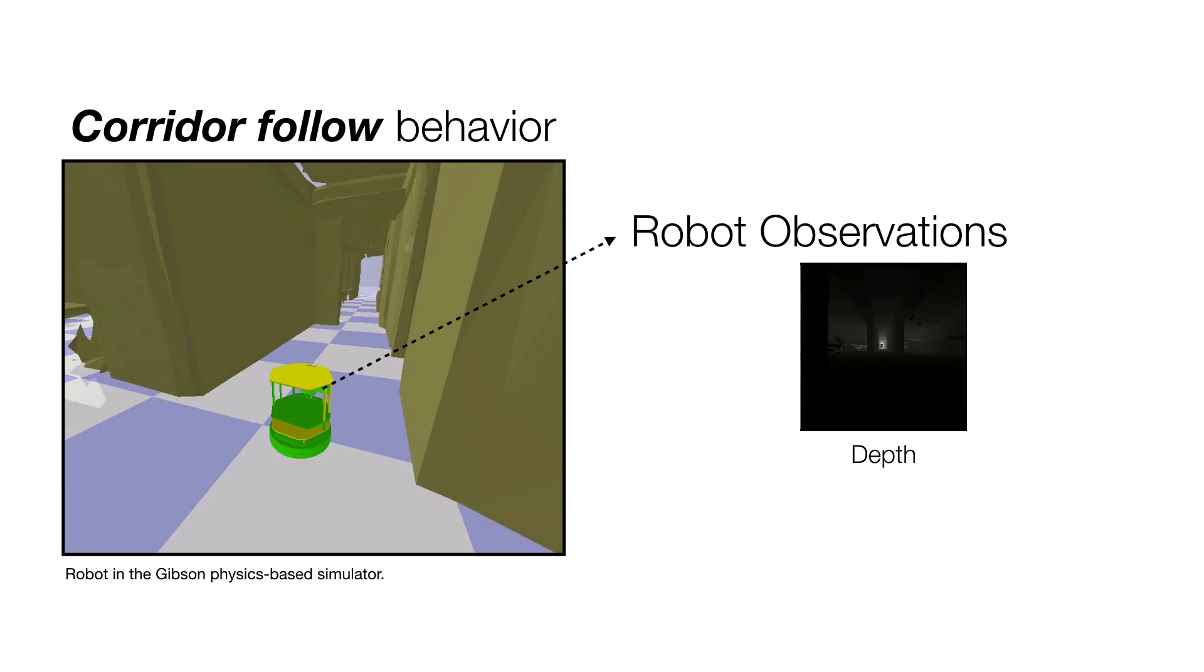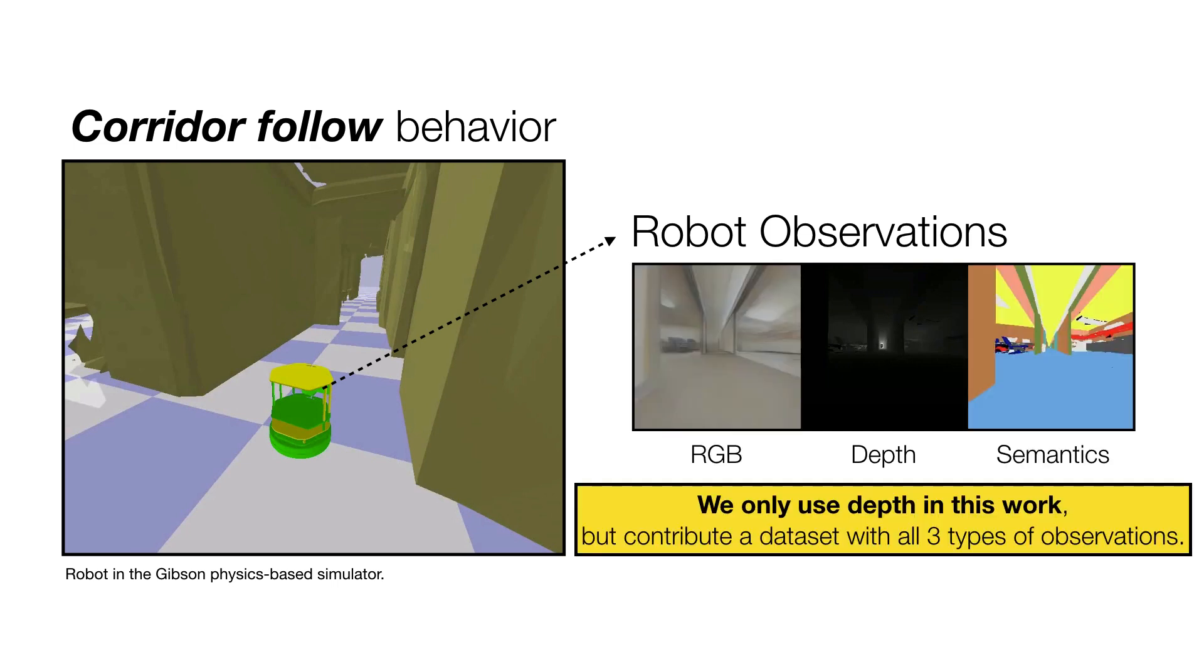Note that we only use depth in this work, but contribute a dataset of navigation trajectories with RGB and semantics information as well. This data can be used to train more complex behavior networks in the future.